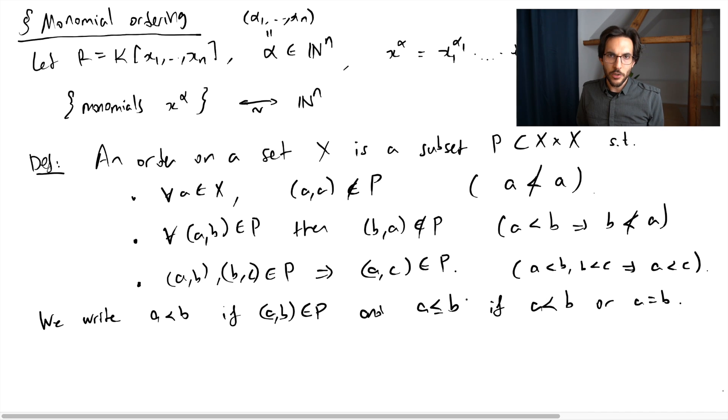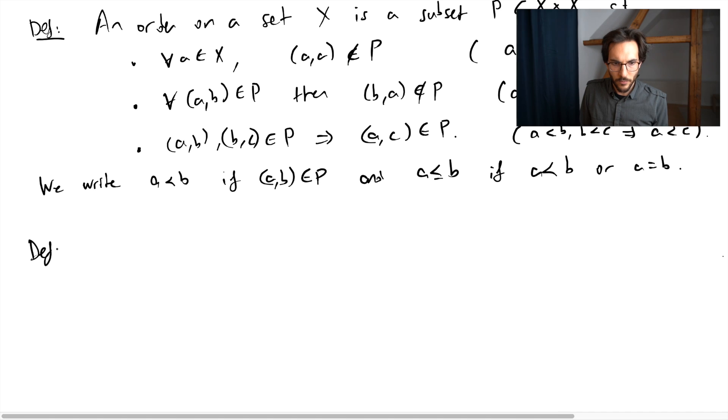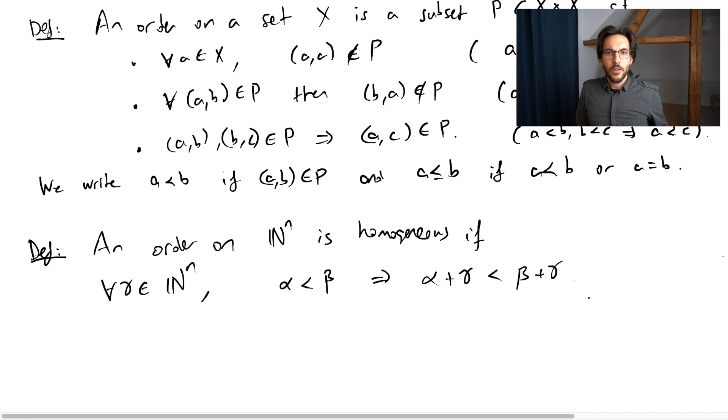Now we would like to add additional structure once we are talking about orders on this set of integers. Because I can add integers, there is this additional structure, and I would like my ordering to be homogeneous. This homogeneity condition means that whenever I have alpha less than beta (alpha, beta tuples as before), and I translate the tuple alpha and beta by the same tuple gamma, then the order relation is preserved. So when it comes to monomials, it says the following: if I have x of alpha less than x of beta, that's by definition going to mean alpha less than beta. Then the multiplication of monomials does not change the ordering on the monomials induced from their exponents.